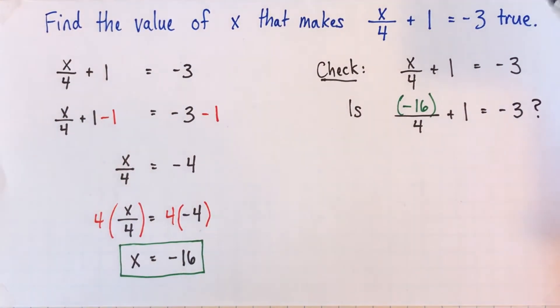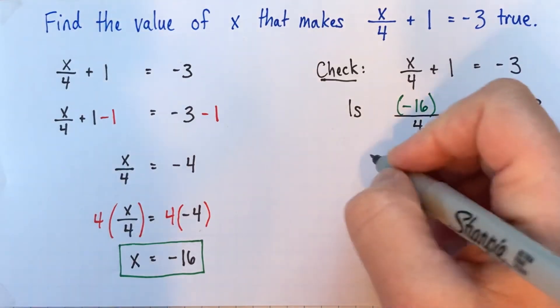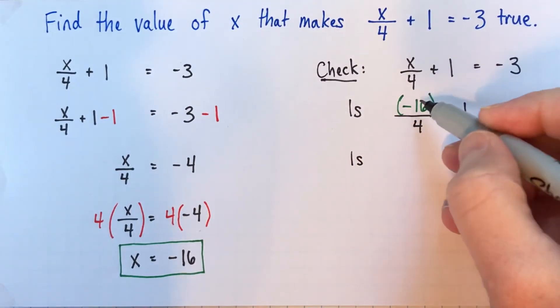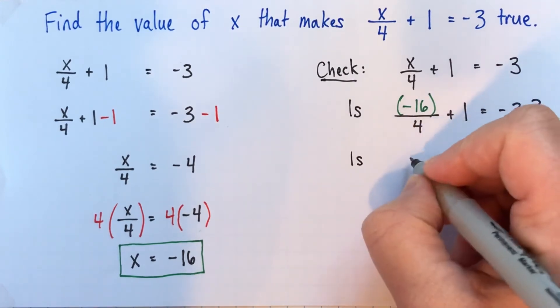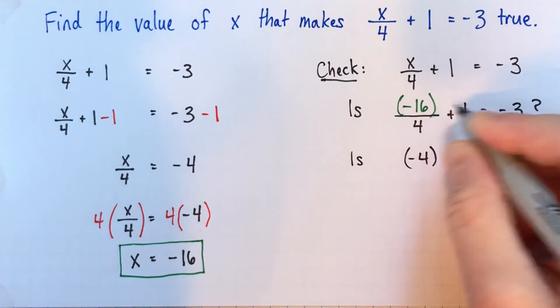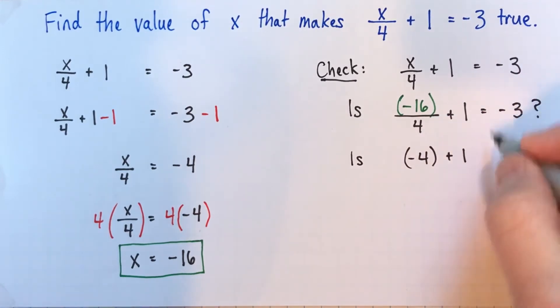And as we check this, we want to just calculate what the left side is equal to. And every time we're going to ask, is it equal to negative 3? And hopefully at the end we will in fact get negative 3. This is the kind of thing that you can probably do in your head, but it's better to just quickly write it down, so that the person looking at your work knows what happened. Alright, negative 16 divided by 4 is negative 4. So we've got negative 4 plus 1 on this side. We're checking, is that equal to negative 3?